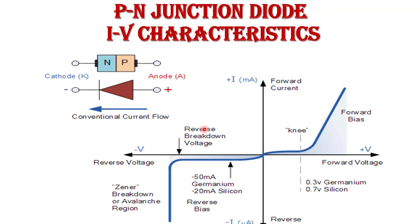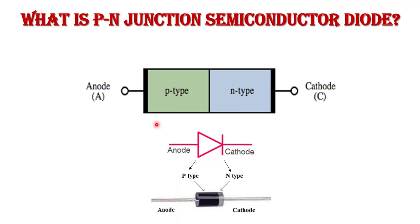First, what is a PN junction? PN junction is the most basic building block of all semiconductor devices. To form a PN junction, we take a P-type semiconductor material and an N-type semiconductor material and join them using a special fabrication technique. The terminals are brought out for external connection. The P side is called the anode terminal and the N side is called the cathode terminal.